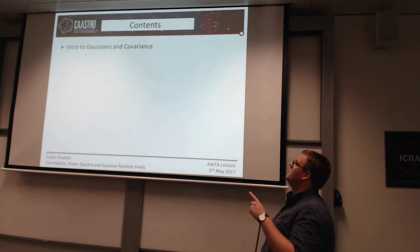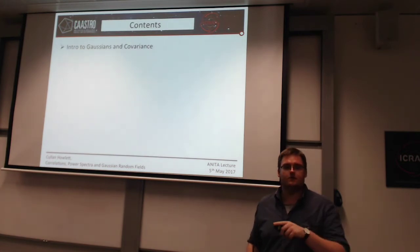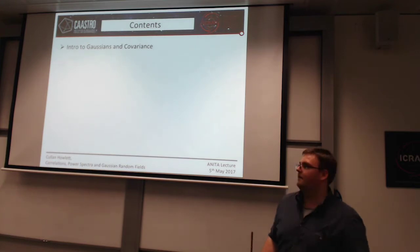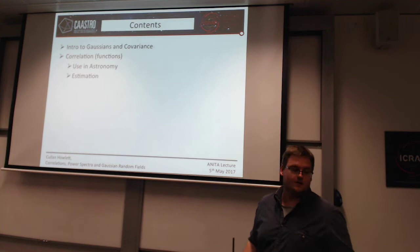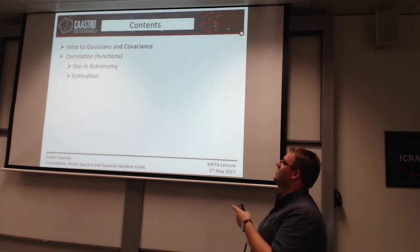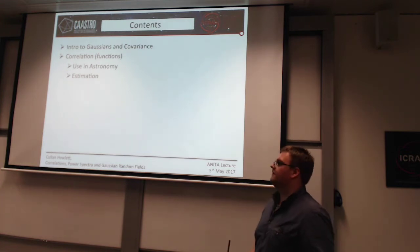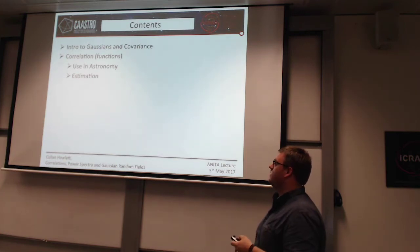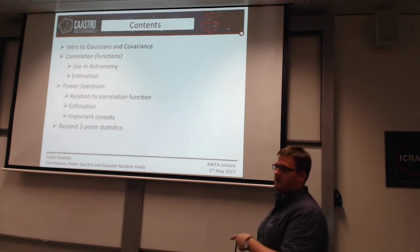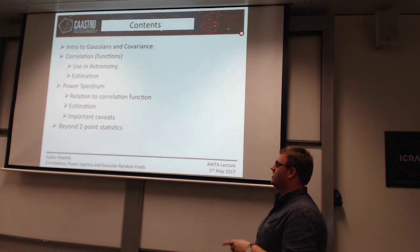I'll go over an intro to Gaussians, starting with something you hopefully know, which is a Gaussian. Then I'll use that to introduce covariance, and from covariance we'll go to correlations and correlation functions. I'll give a general overview of those and how they can be used in astronomy, primarily focusing on large scale structure, though these should be transferable to a wide number of uses. Then how we estimate them, and then power spectra, their relation to the correlation function, and some important caveats.